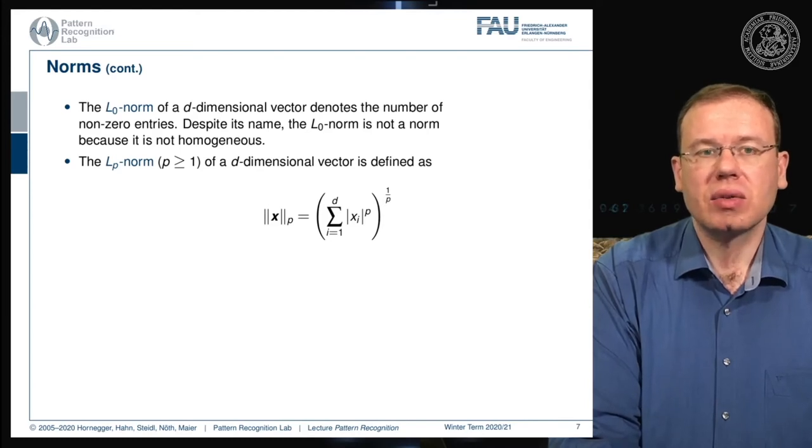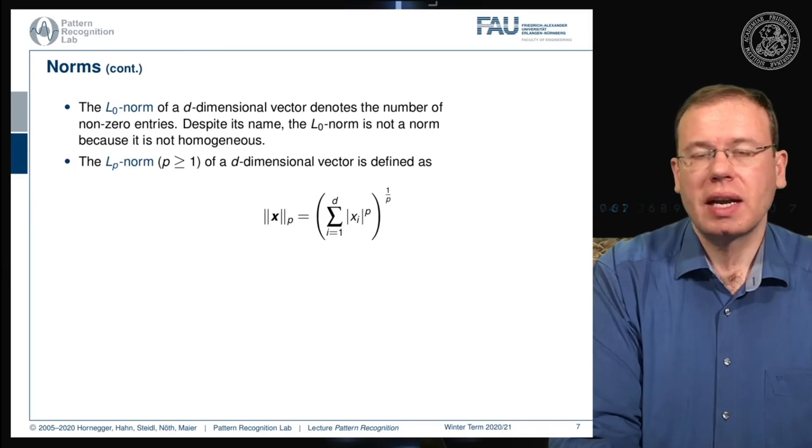Technically, you can do this with values lower than one, but then you end up with cases that no longer fulfill all the previous norm properties. In literature, you find this as the L0 norm or L0.5 norm—you use the same idea of computing them but with values smaller than one.